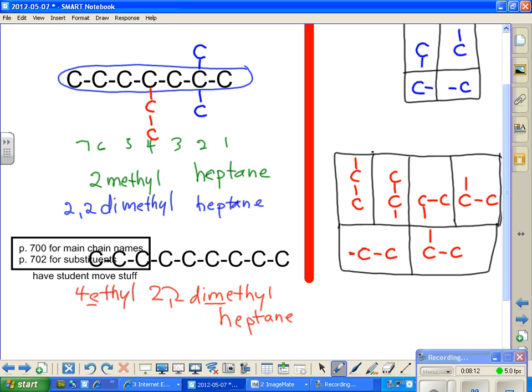So the number of substituents on the carbon you have to put that number, right? And you have to put that number for every carbon that's on it. And the most substituents it could have would be 2.